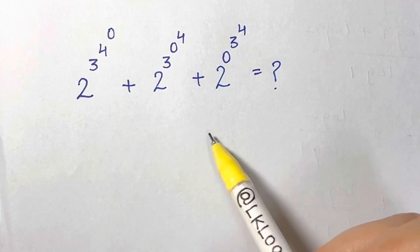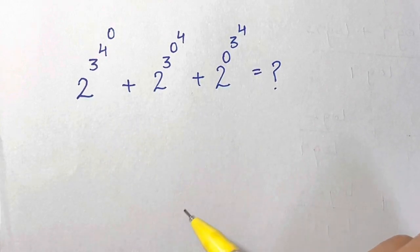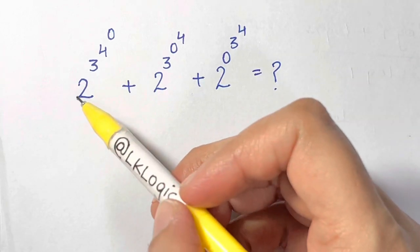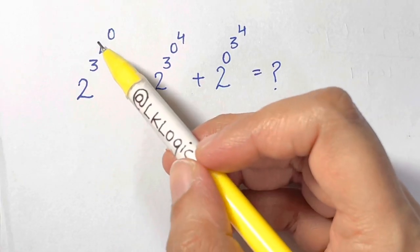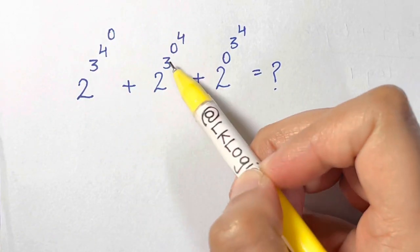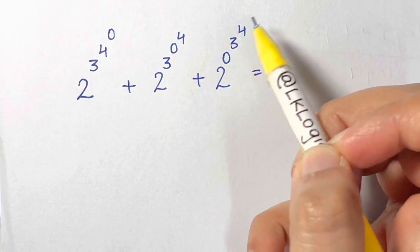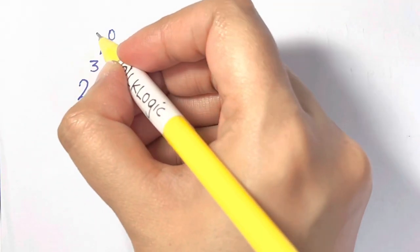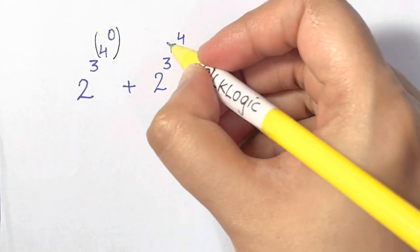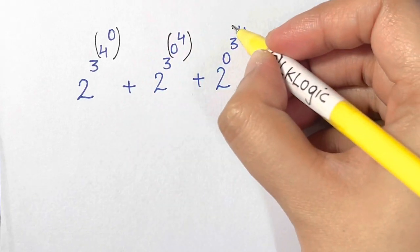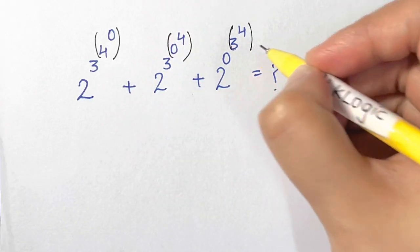Hi guys, I have a nice exponential problem for you all. What we're going to do here is solve 2 to the power of 3 to the power of 4 to the power of 0. Whenever you have powers to powers like this, we're just going to put the brackets here on the powers and then solve for it.